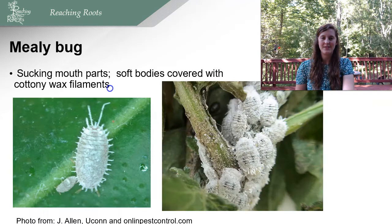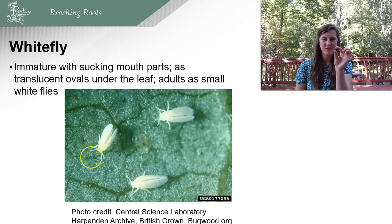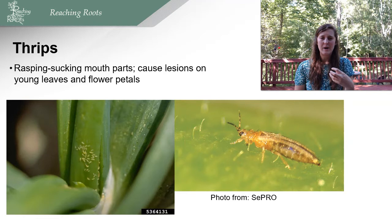Mealybugs have sucking mouth parts and soft bodies covered with cottony wax filaments. Scale has sucking mouth parts and is covered by a hard shell. Whiteflies have sucking mouth parts and appear as translucent ovals underneath the leaves, with adults being small white flies. Thrips have rasping, sucking mouth parts and cause lesions on young leaves and flower petals — like the other insects, they suck the life juices out of the plant, causing the plant to use more water, dry out faster, and suffer huge damage.